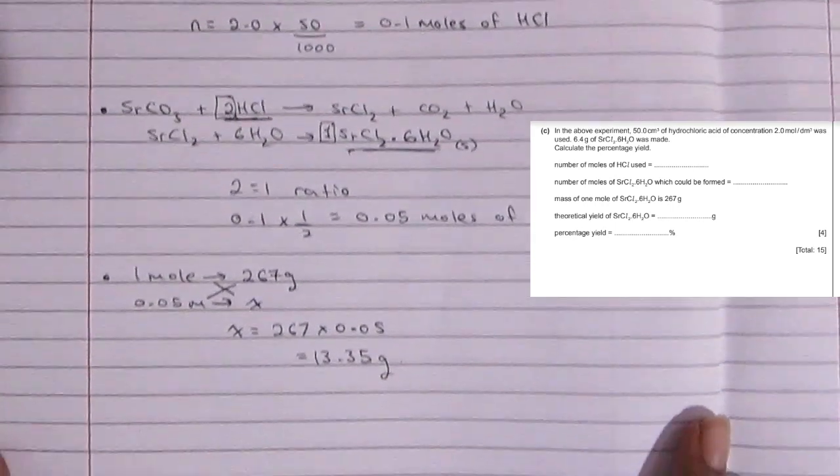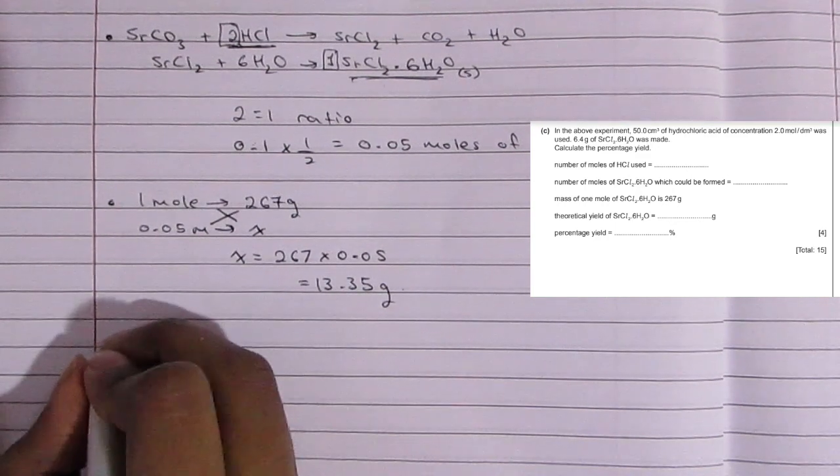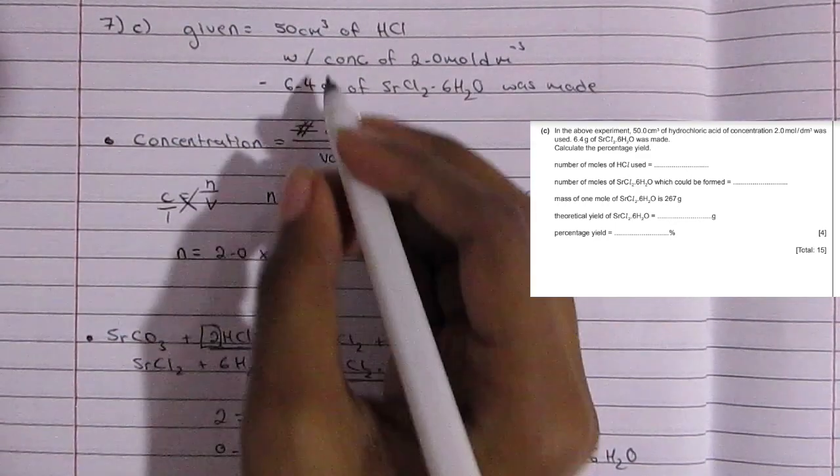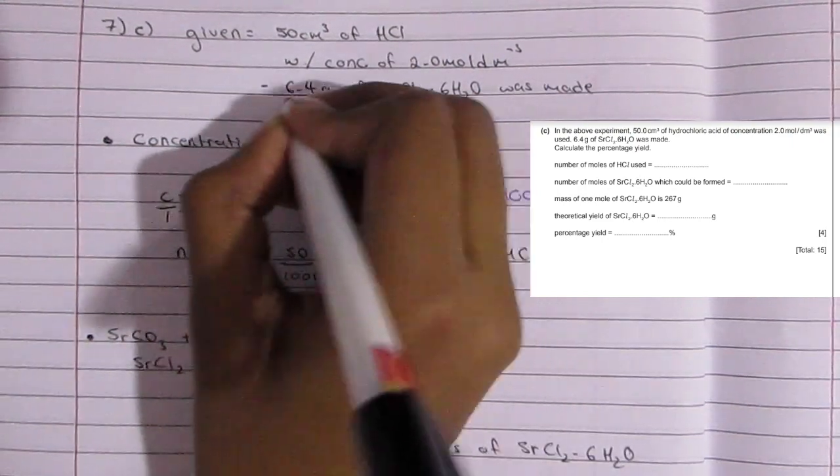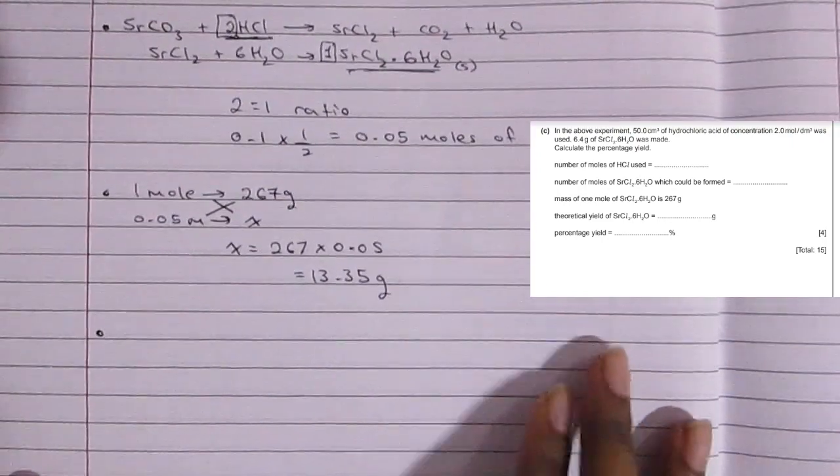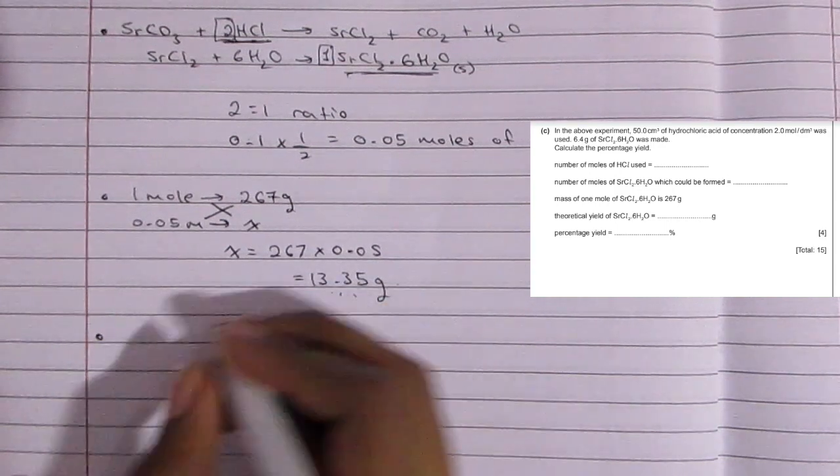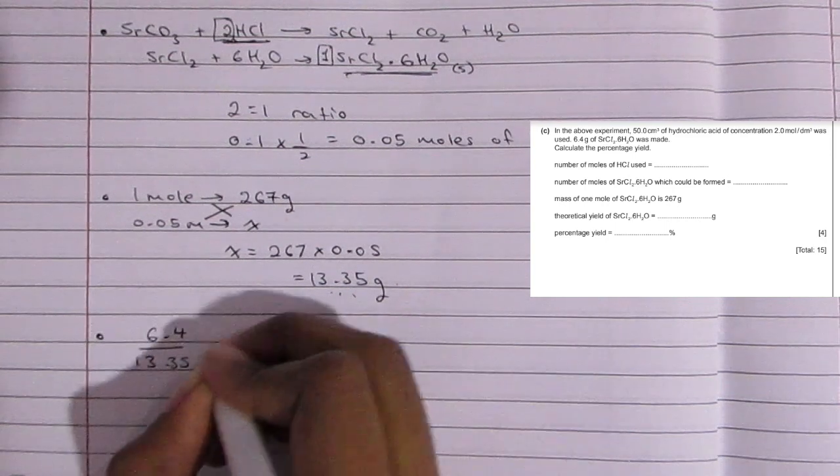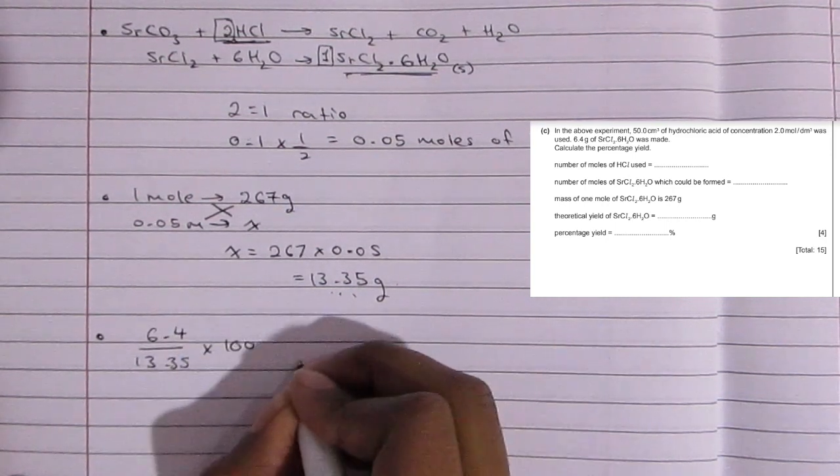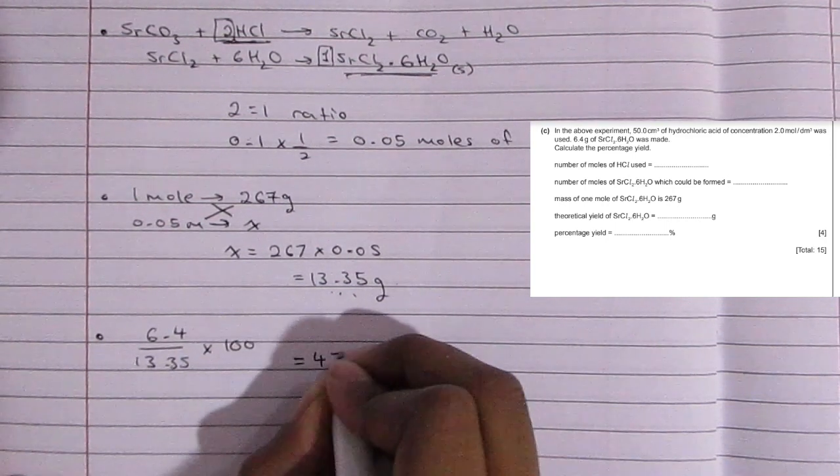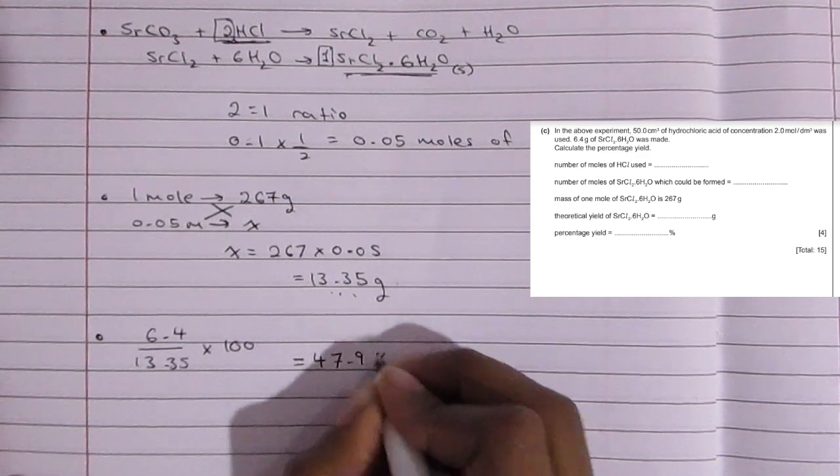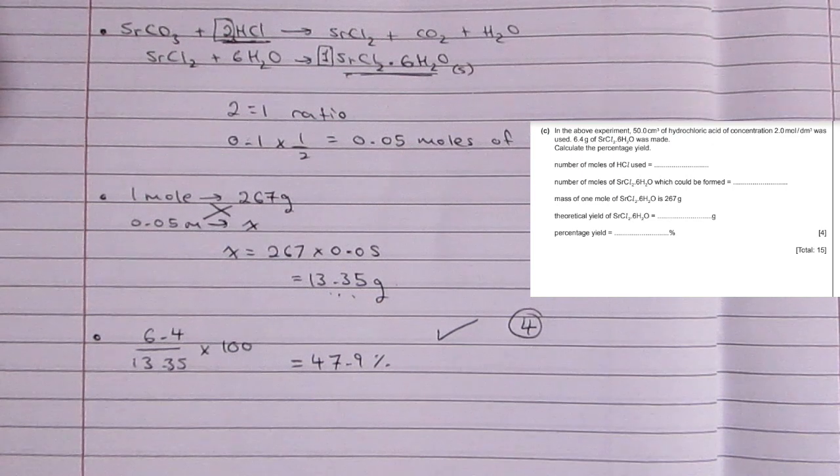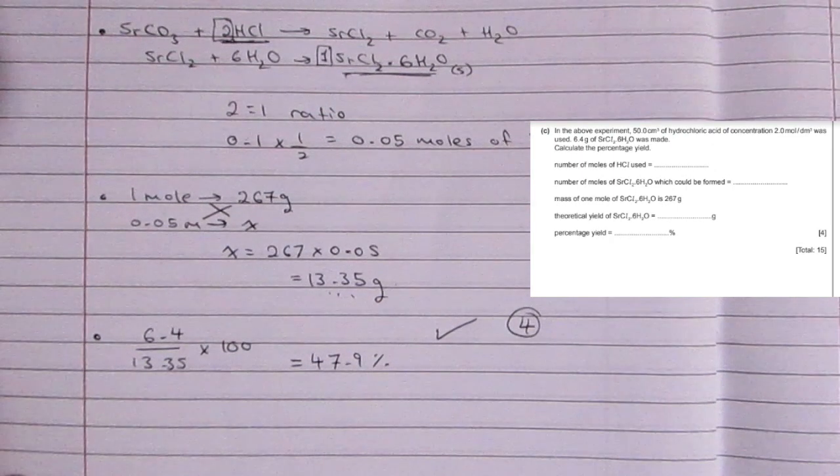So that's it for the theoretical yield. Now for the fourth part and the last part, that is to find the percentage yield. We're told earlier in the question that we were only able to get 6.4 grams of the strontium chloride hexahydrate, but in theory you were supposed to get 13.35. So we're going to do 6.4 divided by 13.35 times 100, and that gives us 47.9 percent.